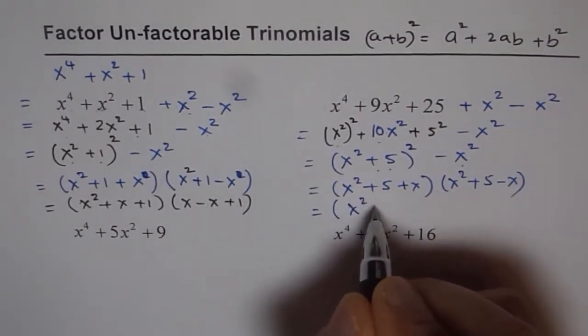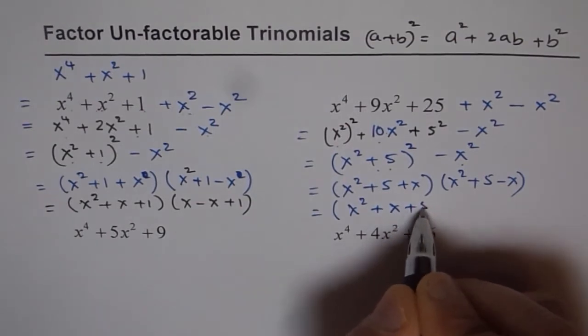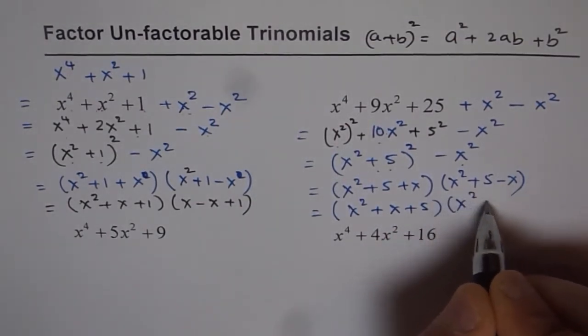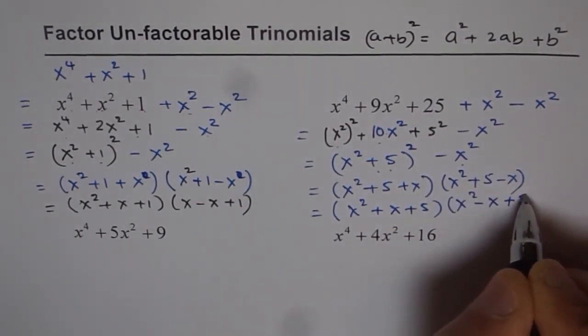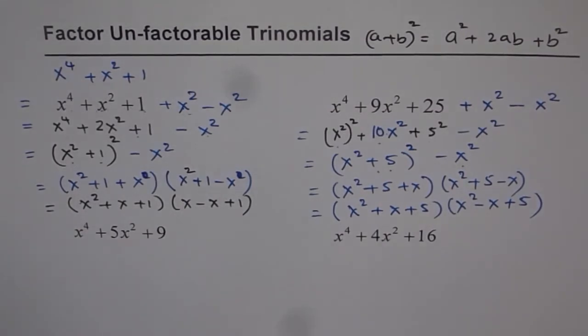Let me rearrange. We get (x² + x + 5)(x² - x + 5). I hope you understand the process.